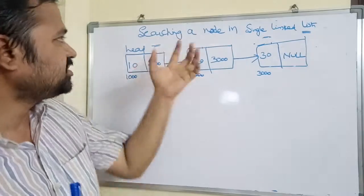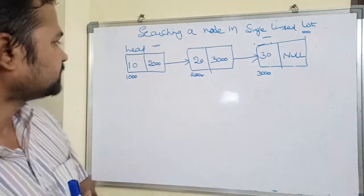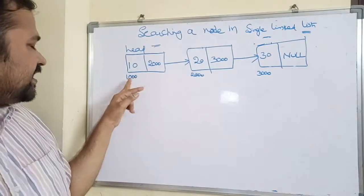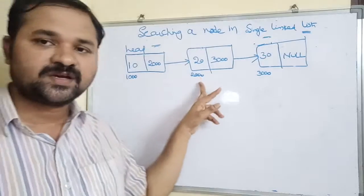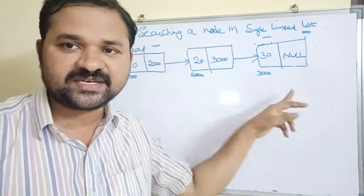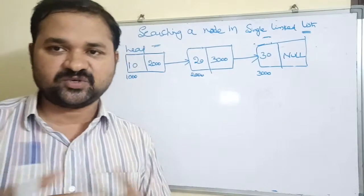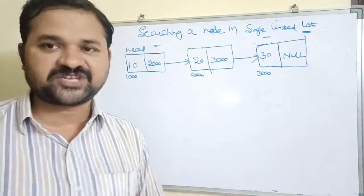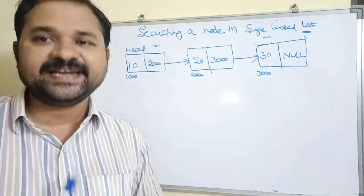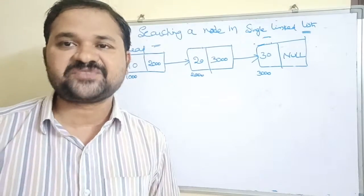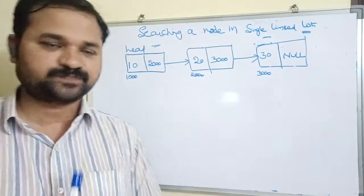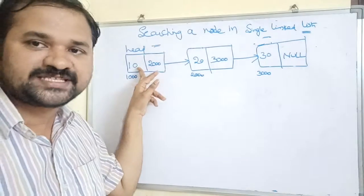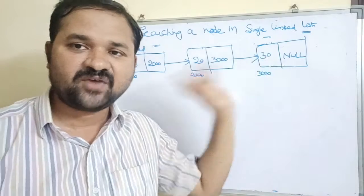Let's see about searching a node in a single linked list. We have a single linked list with three nodes where the address of the first node is 1000, address of the second node is 2000, and address of the third node is 3000. Each node contains two fields: a data field and a next field. The data field is an integer value, and the next field contains the address of the next node.